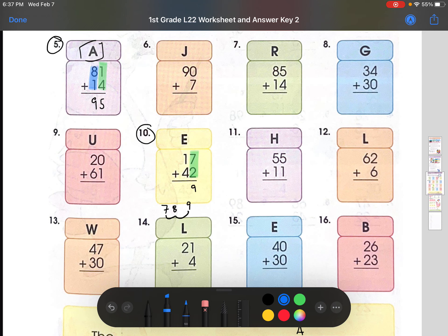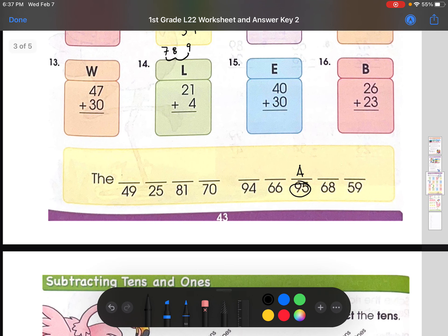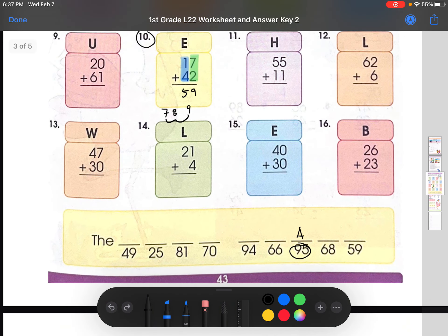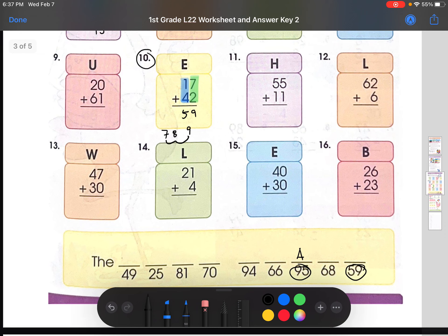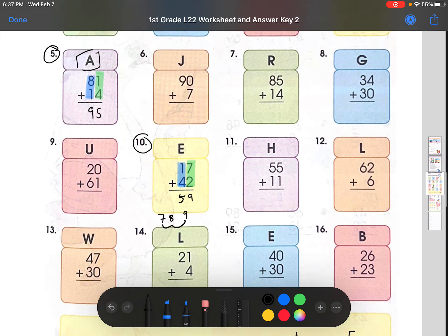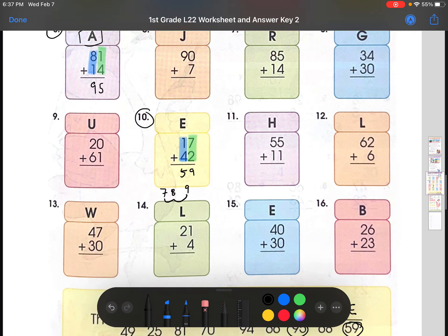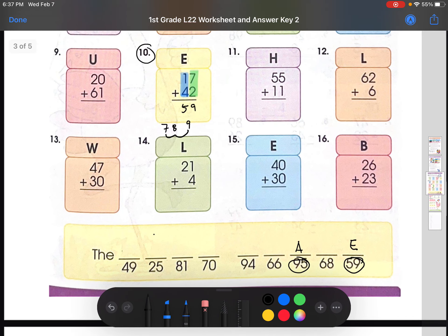And then we would go to the 10s place. 1 plus 4, which is 5. And now we will check down here again if there is a 59, which there is right here. So that means 59 is E. And you would just continue doing this until you get whatever the answer here is. Let's do one more.